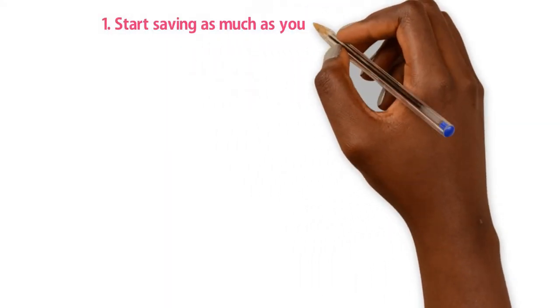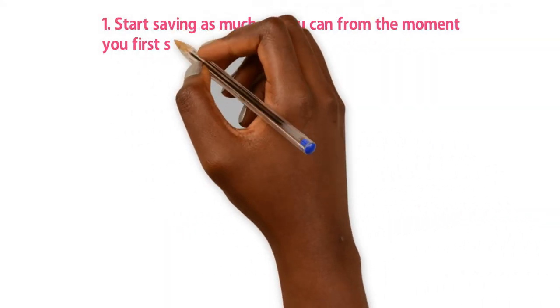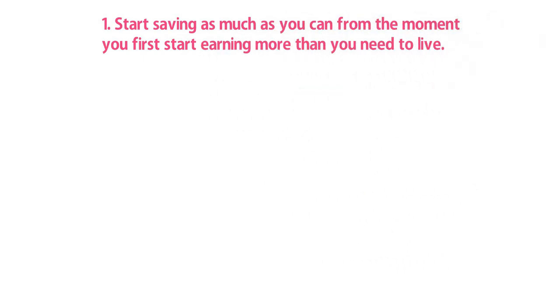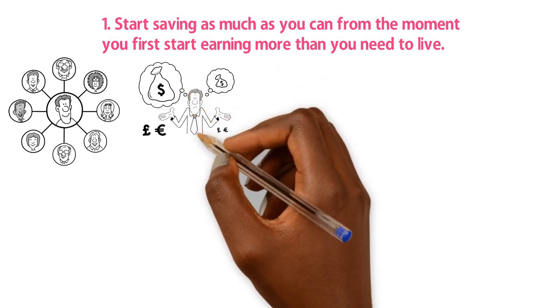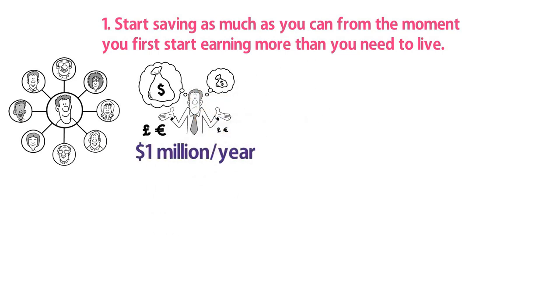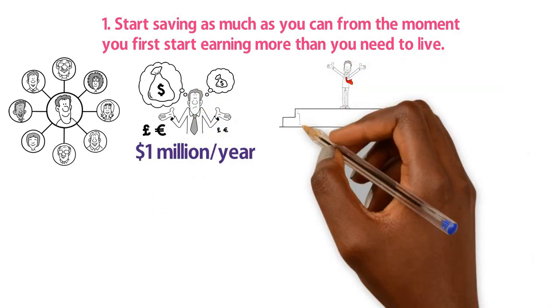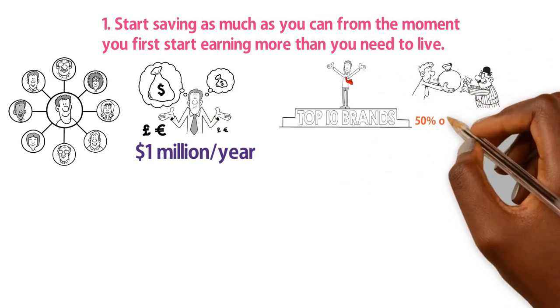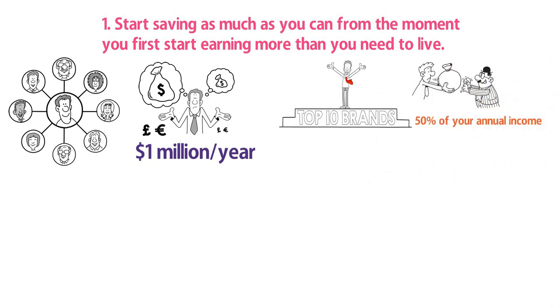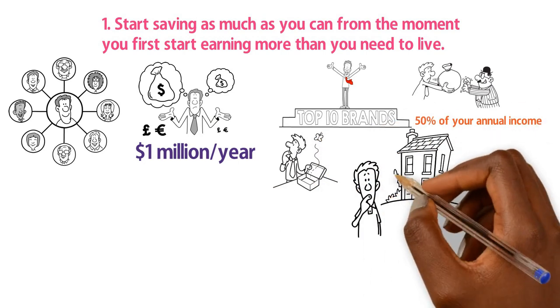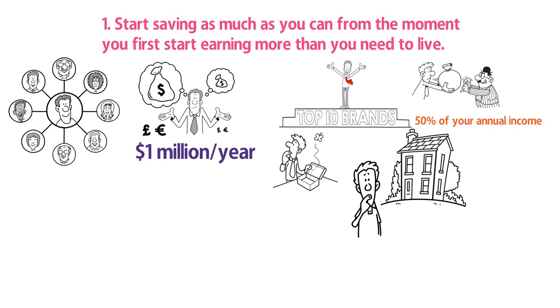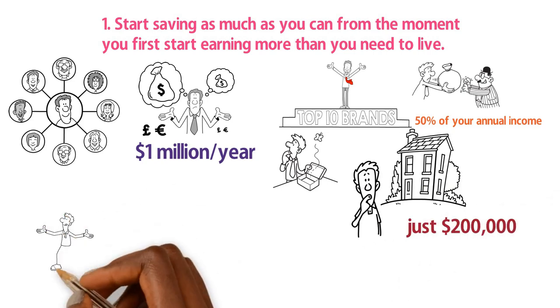Rule 1: Start saving as much as you possibly can from the moment you first start earning more than you need to live. Most people think that the only way to become a millionaire is to earn at least a million a year. But even if you're one of the top earners in the world, taxes will eat away roughly 50% of your income annually. Then after you deduct living expenses, the cost of rent or a mortgage, and a few vacations, you might end up with just $200,000 if that.